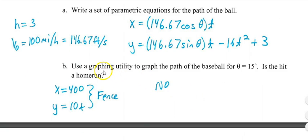Then it asks if you use a graphing utility to graph the path of the baseball for theta equals 15 degrees, is the hit a home run? Now, obviously I had to write my answers on here, so we know it's not. But I'm going to show you how to do this in Desmos. You can also put the fence in Desmos because you know it's 400 feet from home plate, so X is 400, and the Y value is 10T because it's 10 feet tall.